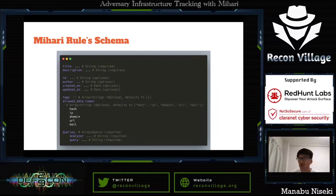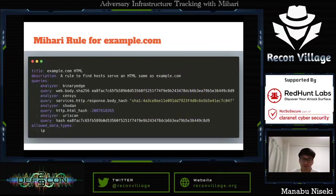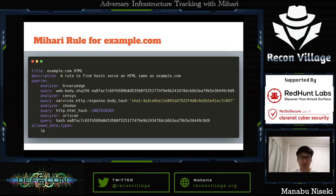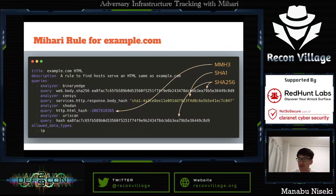This is Mihari's rule schema. The required attributes are title, description, and queries — that's all. For example, remember the fingerprints of example.com: this is a rule to find hosts which serve the same HTML as example.com, using MurmurHash3 for Shodan, SHA-1 for Censys, and SHA-256 for FinalEdge and URLscan. So you can combine multiple search queries in a single rule.